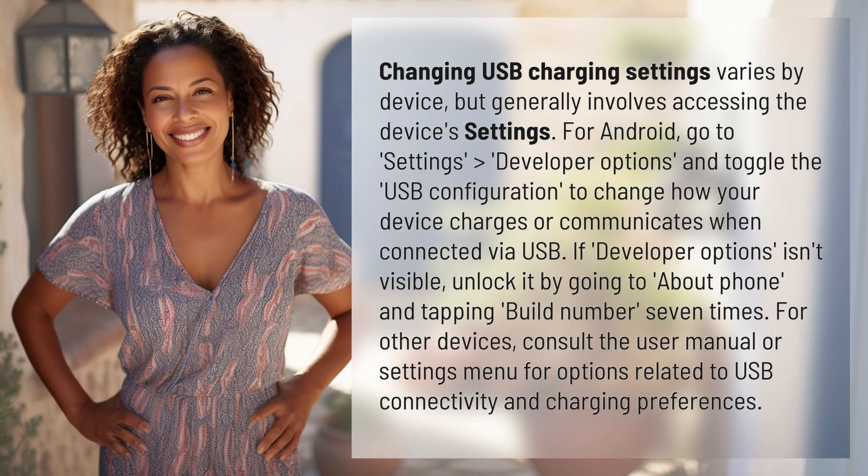Changing USB charging settings varies by device, but generally involves accessing the device's settings. For Android, go to Settings, Developer Options, and toggle the USB configuration to change how your device charges or communicates when connected via USB.